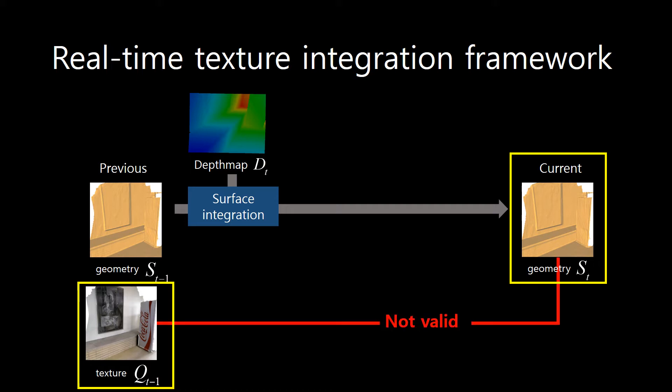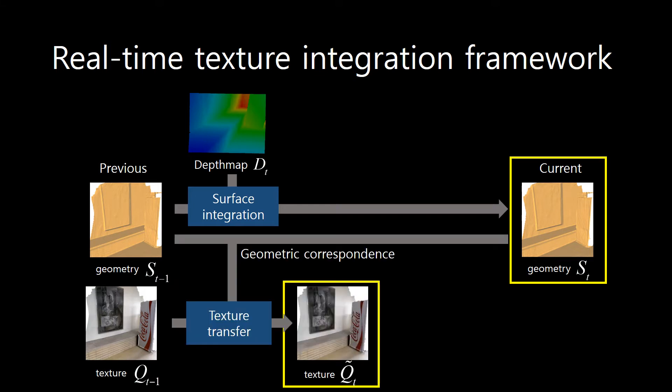Since the current geometry is updated, the previous texture is not valid for the current geometry. So, we transfer the previous texture map to the current geometry by using the geometric correspondences between the current geometry and the previous geometry. Now, the transferred texture map is valid with respect to the current geometry.